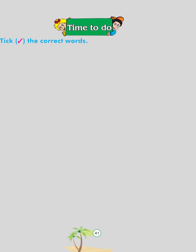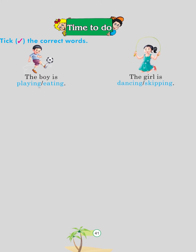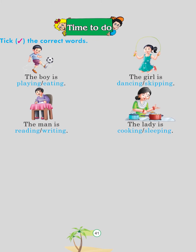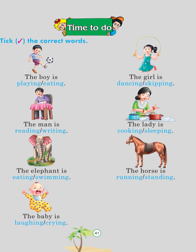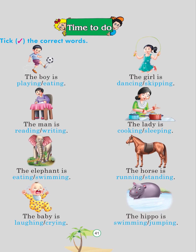Time to do. Tick the correct words: The boy is playing. The girl is skipping. The man is writing. The lady is cooking. The elephant is eating. The horse is standing. The baby is crying. The hippo is swimming.